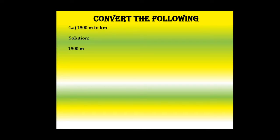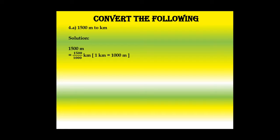Look at the solution. First we write 1500 meters, then divide by 1000, and the unit turns into kilometers. Side note: 1 kilometer is equal to 1000 meters. After dividing, we get the answer 1.5 kilometers.